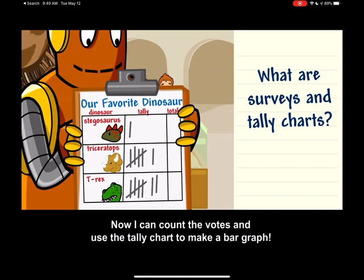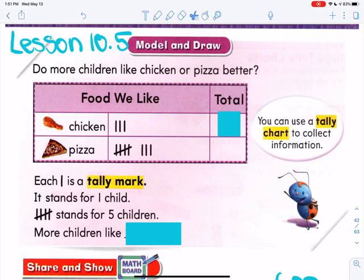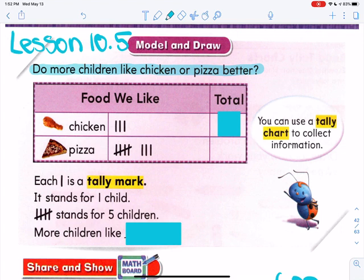Now I can count the votes and use the tally chart to make a bar graph. We're going to stop the video there and we're going to make some tally charts. The directions say: do more children like chicken or pizza better? You don't need your math book just yet. Give me just one minute to do this problem and then I'll tell you what page we're on.